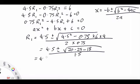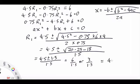That gives us 4.5 plus or minus 1.5 over 1.5. So we're going to get two solutions here. We have 6 over 1.5 or 3 over 1.5, which means we have 4 ohms or 2 ohms.